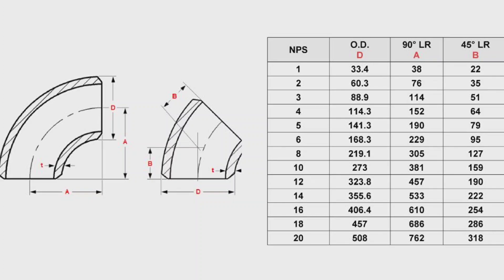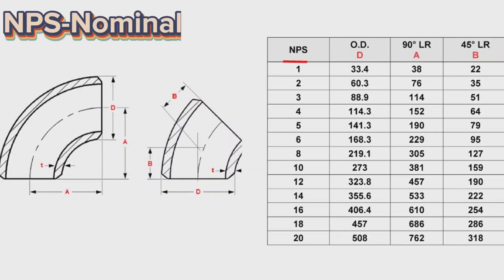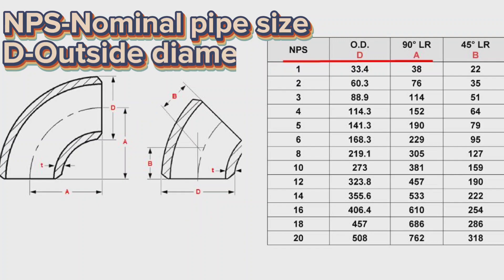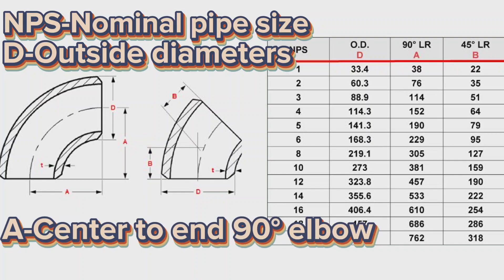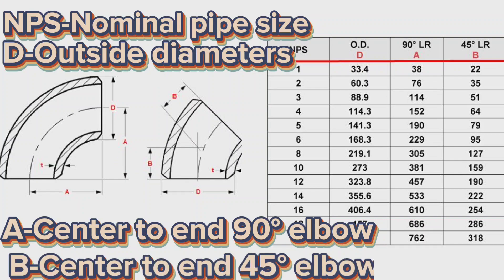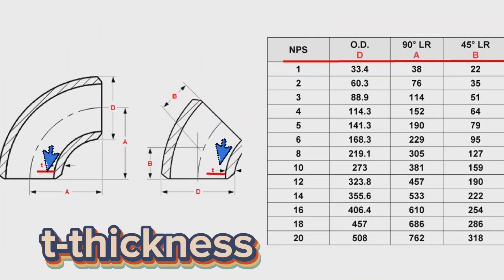Let's look at the size chart of elbows. Here, NPS means nominal pipe size. D means outside diameter of elbow. A means center to end dimension of long radius and 90 degree elbow. B means center to end dimension of long radius 45 degree elbow. T means material thickness of elbow.